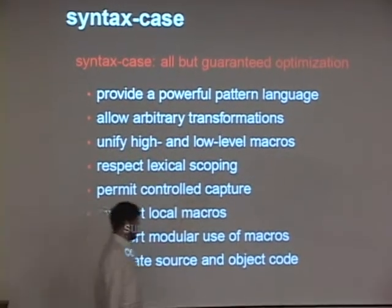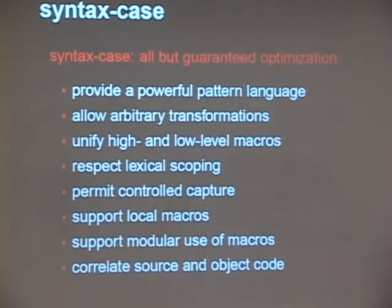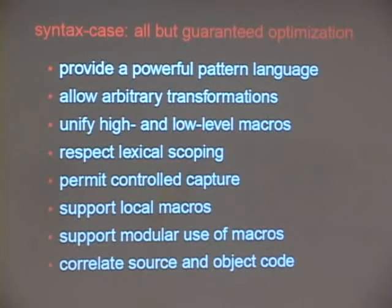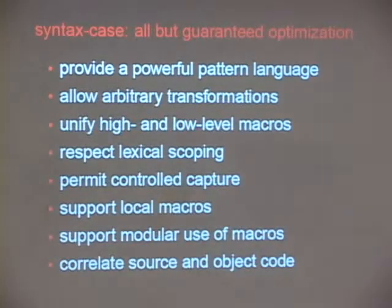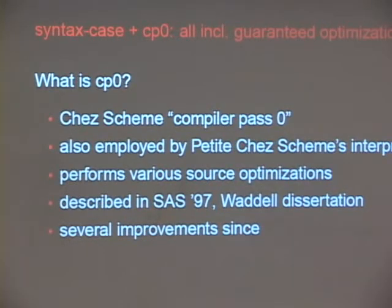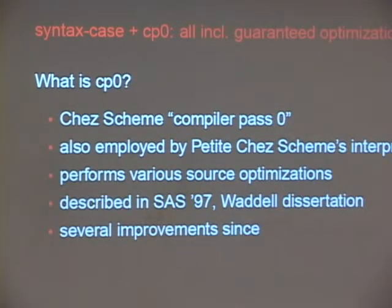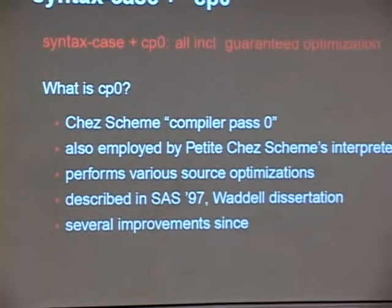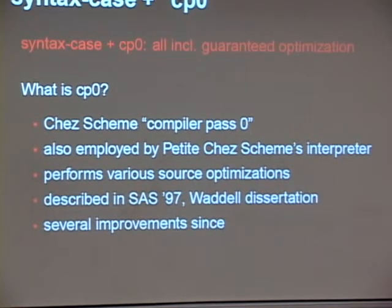Syntax-case gives all of these rights — everything is in syntax-case. And you could either say that we created syntax-case so that it would give us everything we wanted, or you could say that we tailor-made the rights so that syntax-case would satisfy them, and there's a little truth to both. So how do we get the guaranteed optimization — that one right also delivered by syntax-case? We add CP0, Compiler Pass 0. It's actually the fourth pass after macro expansion, but who's counting? It's also employed by Petite Chez Scheme's interpreter, so if you download Petite Chez Scheme and use it, you'll also get the guaranteed optimization there. Petite Chez Scheme is really a four or five pass compiler that produces interpretable thread code. It performs a set of source optimizations we'll talk about, and we started working on this in '96, '97 and have made several improvements since then.